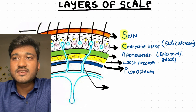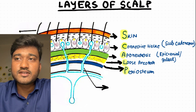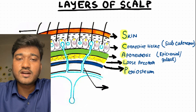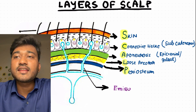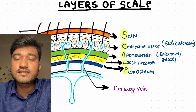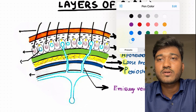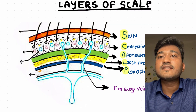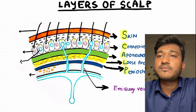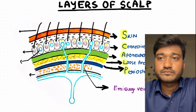So once again: Skin, Connective tissue, Aponeurosis, Loose areolar tissue, then Periosteum. Here I am pointing towards the emissary vein — the vein that connects or drains the skin and connective tissue into the dural venous sinuses. The yellow I am drawing right now represents the skull bone.